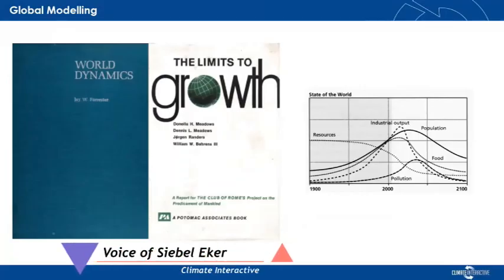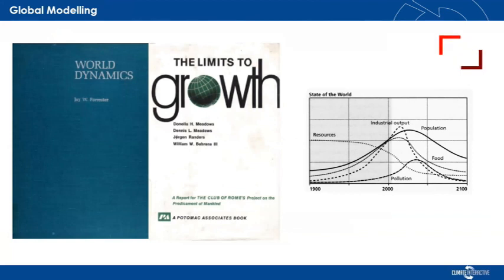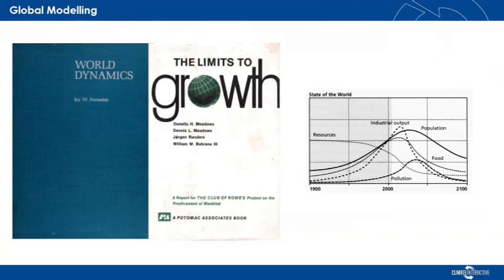Global modeling. System dynamics has actually played a pioneering role in global change modeling. World Dynamics of Jay Forrester was a seminal work, and the Limits to Growth, which is based on World Dynamics, has been a highly influential study when it was published in 1973. It was one of the first studies to focus on the feedbacks between the socio-economic and environmental systems and projected future problems and difficulties about sustainability.